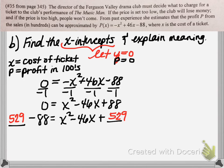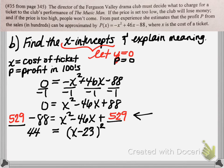Now we've completed the square. The trinomial on the right-hand side should factor as a perfect square: x minus 23 times x minus 23, which is written as (x minus 23) squared. On the left-hand side, 529 minus 88 gives us 441. Now we can use the square root method — square rooting both sides to solve the quadratic equation. Don't forget, that always gives a plus or minus. The square root of 441 is 21.